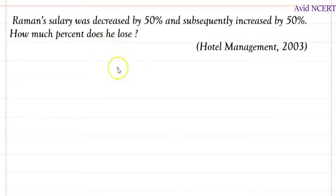So let the Raman salary at the beginning be x. Out of this x it is decreased by 50 percent.